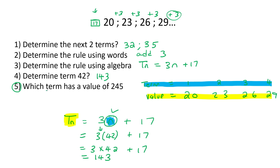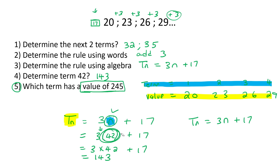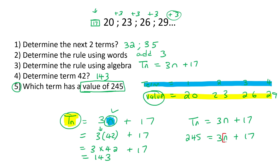Now with this one, they said which term has a value of 245. So they're giving us the value now — the yellow one. We take our formula and rewrite it, putting 245 in the place of the value. Now we want to get the variable n by itself: keep 3N on one side and take everything else to the other side.